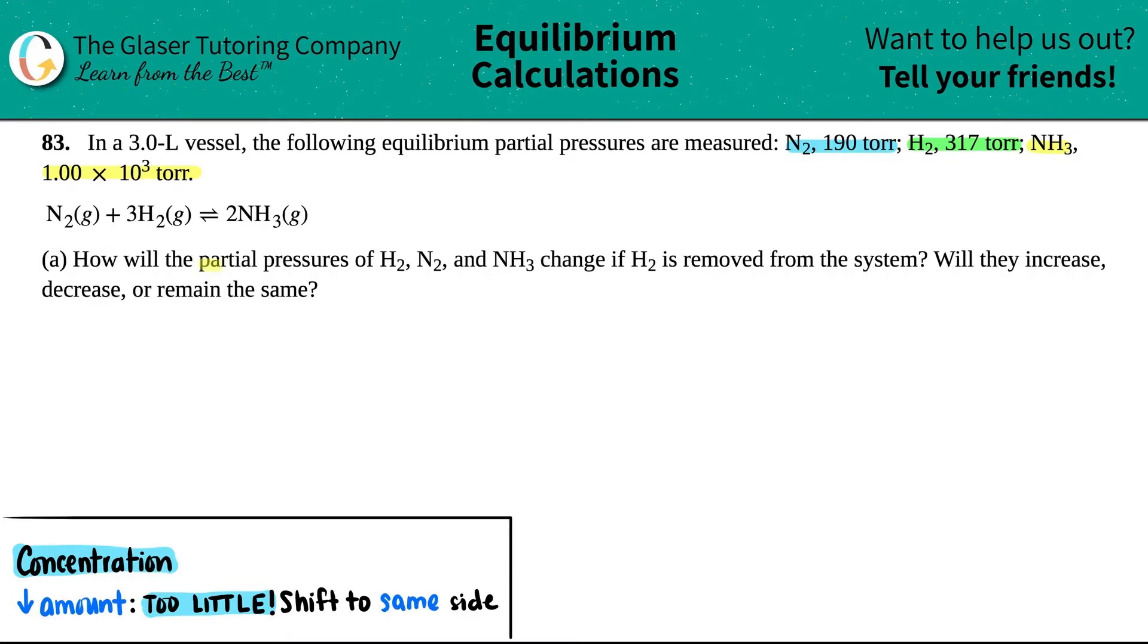So letter A. How will the partial pressures of H2, N2, and NH3 change if H2 is removed from the system? Will they increase, decrease, or remain the same?